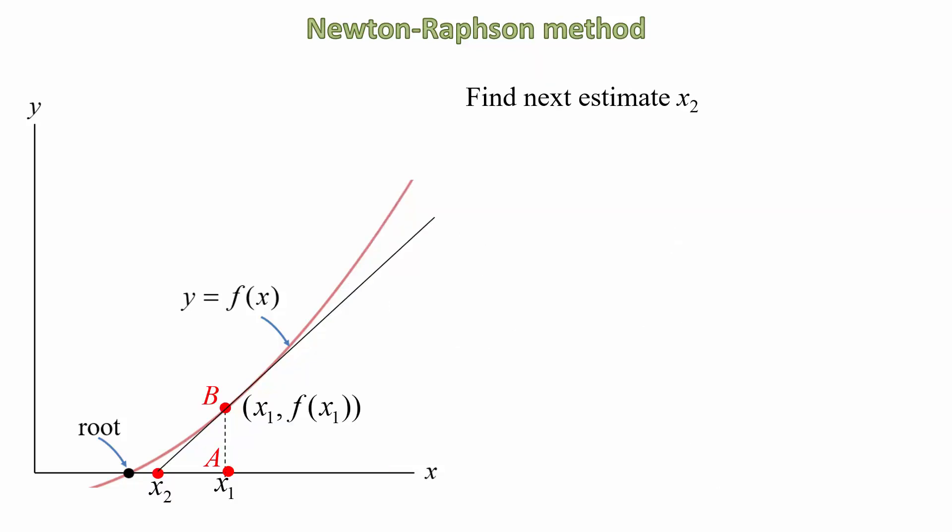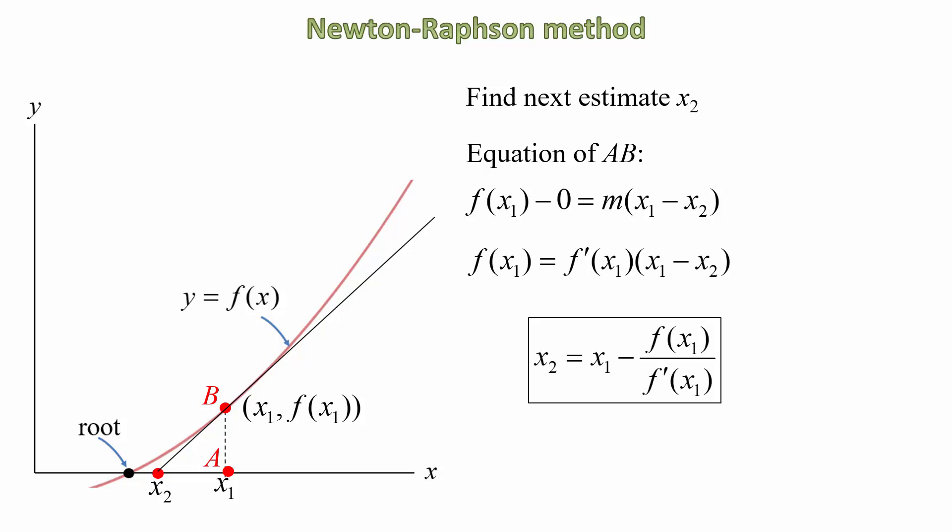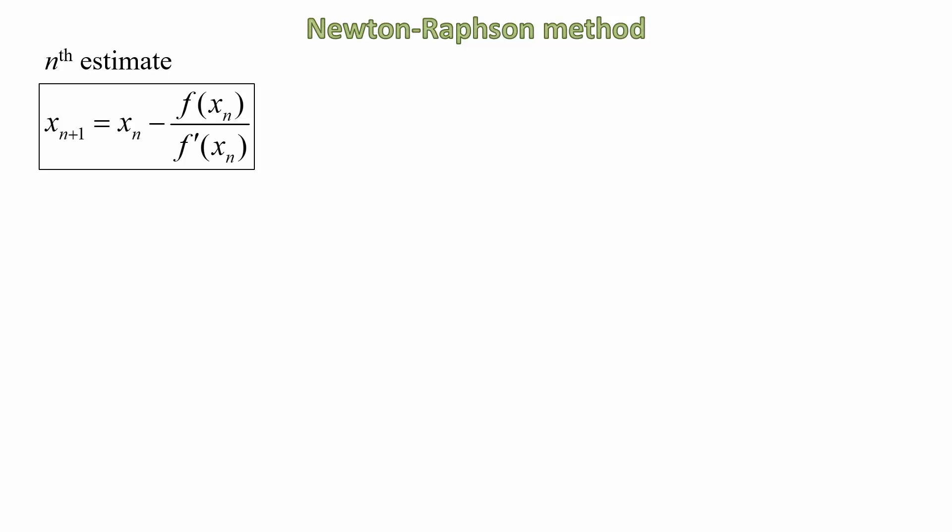What we do now is to use point x₁ as our starting value and repeat the process. If we follow the same method as previously, the equation of the straight line will be f(x₁) - 0 = m(x₁ - x₂). And then we can replace m by the derivative of the function at point x₁. Transposing that to obtain x₂, we have an expression for that value. Now of course we can continue that to obtain estimates for x₃, x₄ and so on. But let's generalize that expression. The nth estimate, where n is a positive whole number, is given by what you can see there.